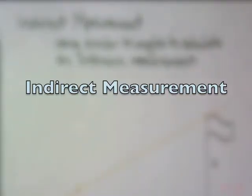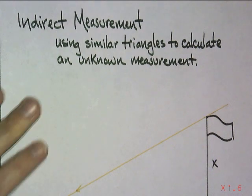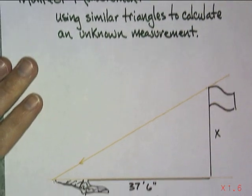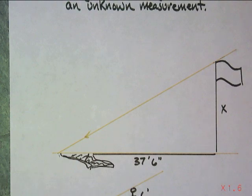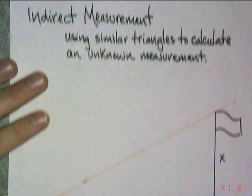This lesson is on indirect measurement and also some attributes of similar triangles. Indirect measurement is the act of using similar triangles to calculate an unknown measurement. Basically it all boils down to finding out the two similar triangles.